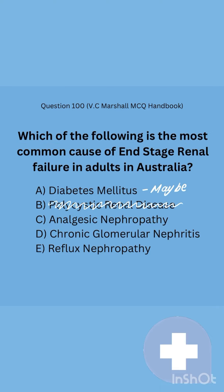Option C is analgesic nephropathy. You might think it's tempting — a developed country, lots of available medication, lots of patients over-medicating. However, more developed countries have more expensive drugs and more choices, so people aren't as forced to use nephrotoxic drugs like NSAIDs as in developing countries. In most developed countries, analgesic nephropathy is on the decline, so it's safe to rule it out.